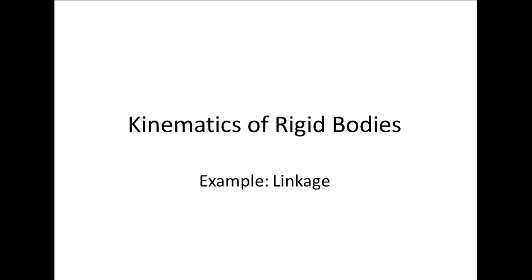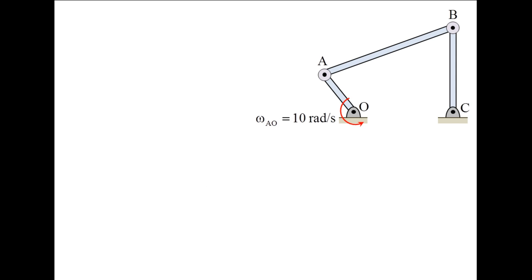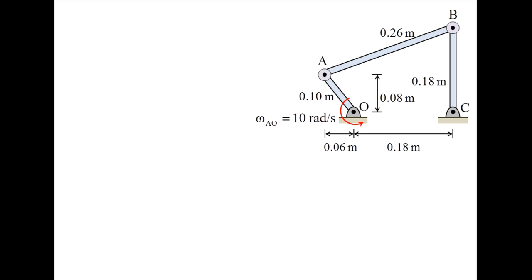In this example, we will examine a rigid body problem involving a linkage. In the linkage shown here, link AO rotates with a constant angular velocity, omega AO, of 10 radians per second in the counter-clockwise direction. Link AO is 0.1 meters in length, link AB is 0.26 meters in length, link BC is 0.18 meters in length. The distance between points O and C is 0.18 meters. When point A is located 0.06 meters to the left and 0.08 meters above point O, link BC is vertical.